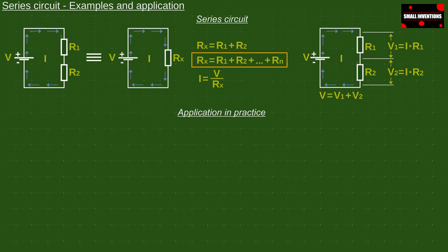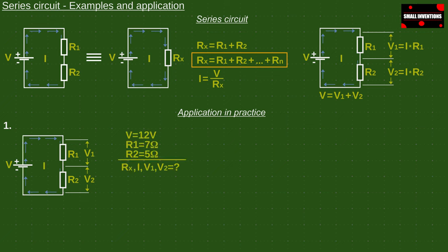In the first example, we will use real values. So, the supply voltage and resistor values are known and we need to calculate the current and voltages V1 and V2. We first calculate the total resistance. Then the current, and the voltages V1 and V2.